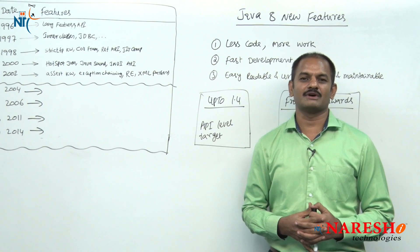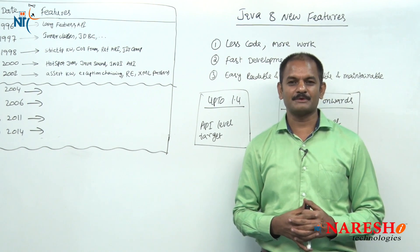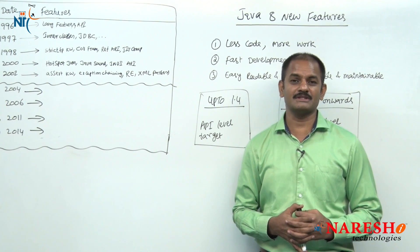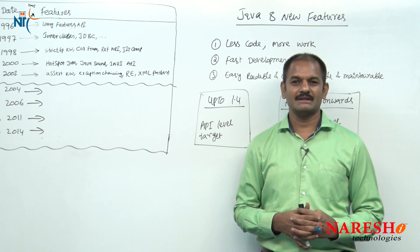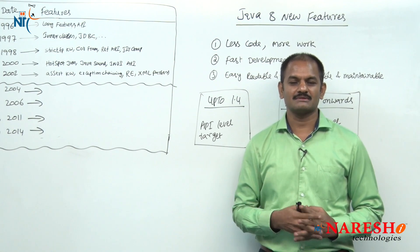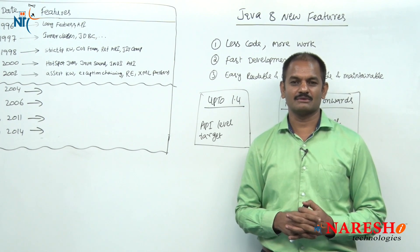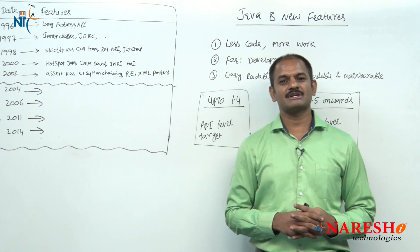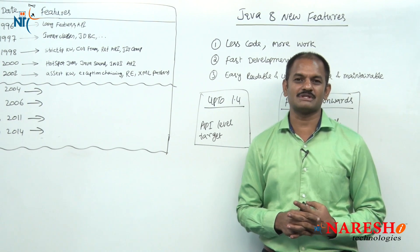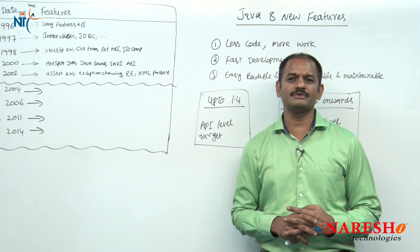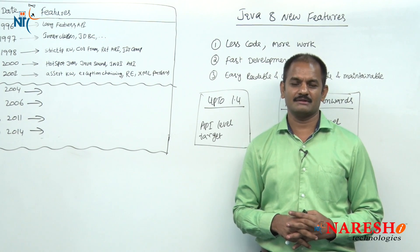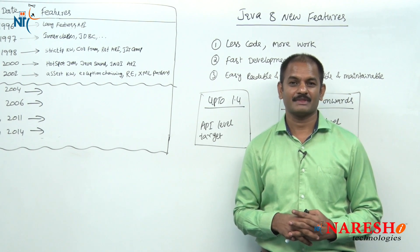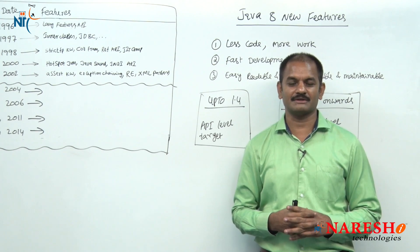Starting with Java 1.0 up to the latest version Java 8, several features have been added. Java 9 is about to release — very soon it is going to launch. Now my question is: from Java 1.0 up to Java 8, there are so many new features added. Why were those features added? What is the purpose? That is the first point you have to learn.